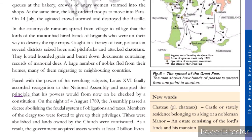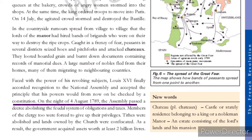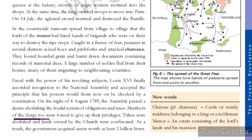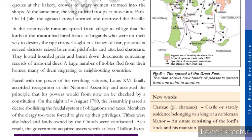Faced with the power of his revolting subjects, Louis XVI finally recognized the National Assembly and accepted that his powers would from now on be checked by the constitution. On the night of 4th August 1789, France passed the law abolishing the feudal system of obligations and taxes, and the clergy were also forced to give up their privileges. Tithes were abolished and lands owned by the church were confiscated. As a result, the government acquired assets worth at least two billion livres, marking the end of special privileges.